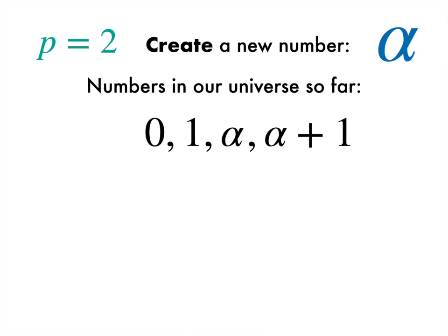0, 1, alpha, and alpha plus 1. And I can't really go further in terms of adding because 2 of anything is just 0. I will relabel alpha plus 1 as beta, the next Greek letter, just as in everyday life you would relabel 7 plus 1 as 8. But remember that beta is one step above alpha, and this is only to keep things neat.